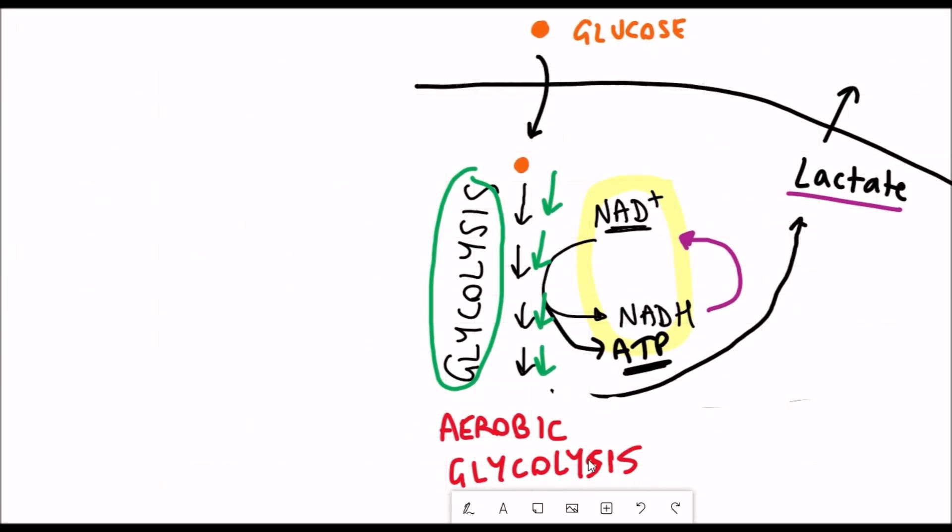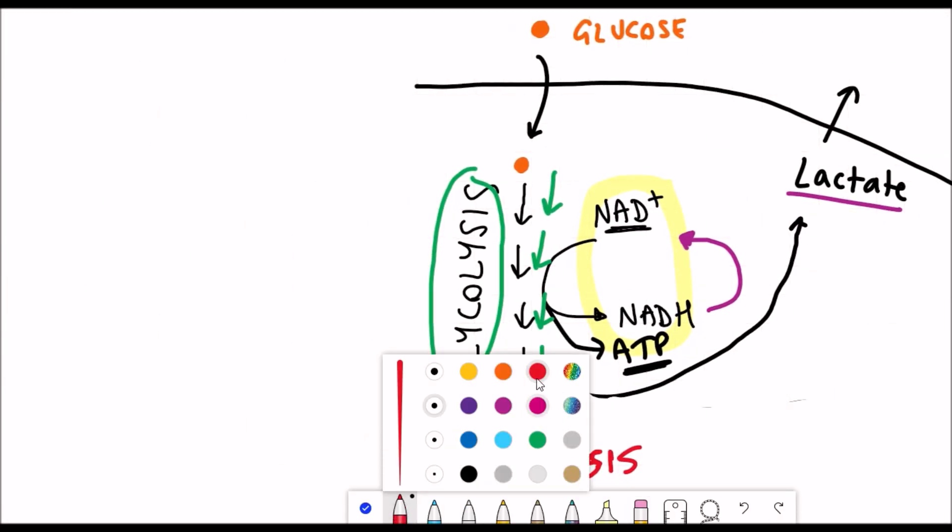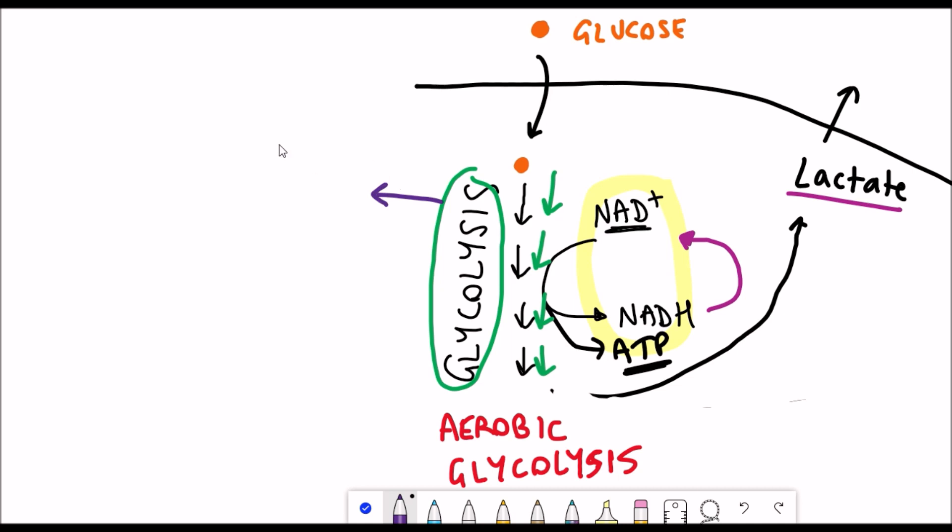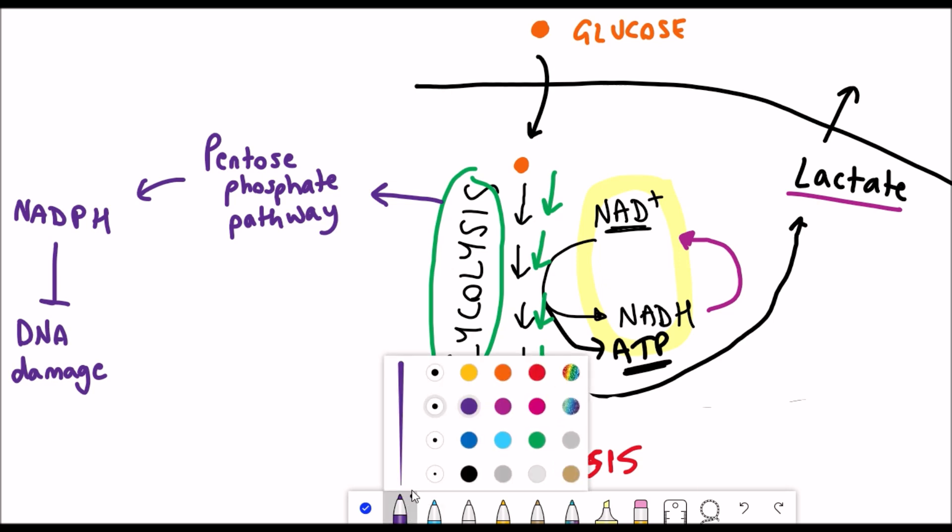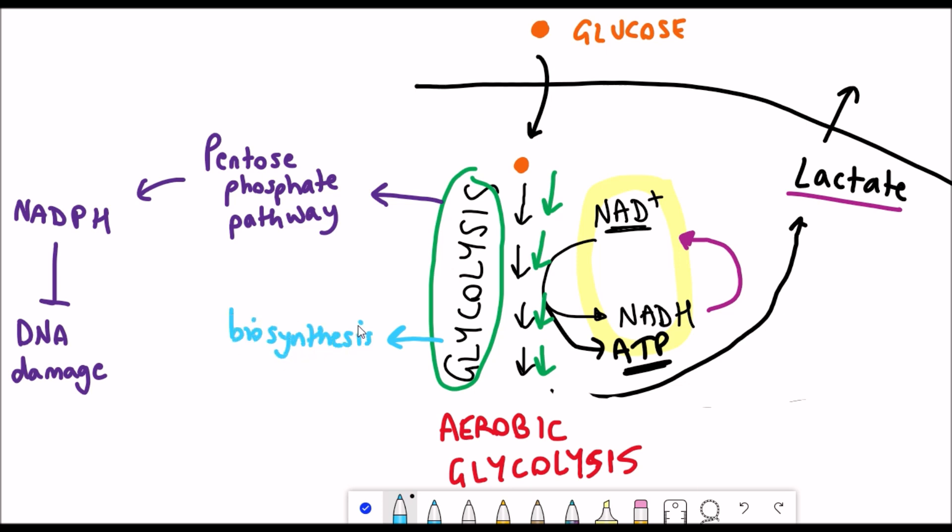Glycolysis is more than just a linear pathway and intermediates within this pathway can be used in different metabolic pathways as well. One of these is the pentose phosphate pathway which can be used to generate NADPH, which is thought to prevent and alleviate DNA damage. In addition, intermediates in the glycolysis pathway can also be used for nucleotide biosynthesis and this can aid growth of the cell.